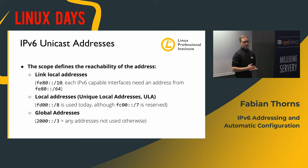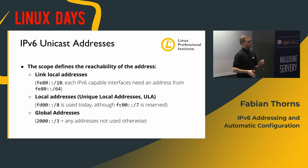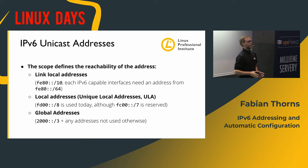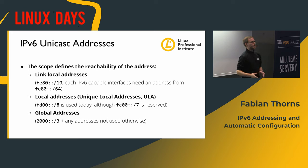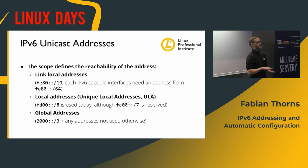Then we have unique local addresses, or ULA. They are supposed to be similar to the private addresses you know from IPv4. You can have your own prefix of ULA addresses, you're allowed to route them within your organization, but they are not valid on the internet. The way you determine your individual ULA prefix contains 40 bytes of random digits, designed so they can't be aggregated when routing. The purpose is to be independent from a provider - if your provider takes their prefix back, ULA addresses let you still reach all devices within your organization.